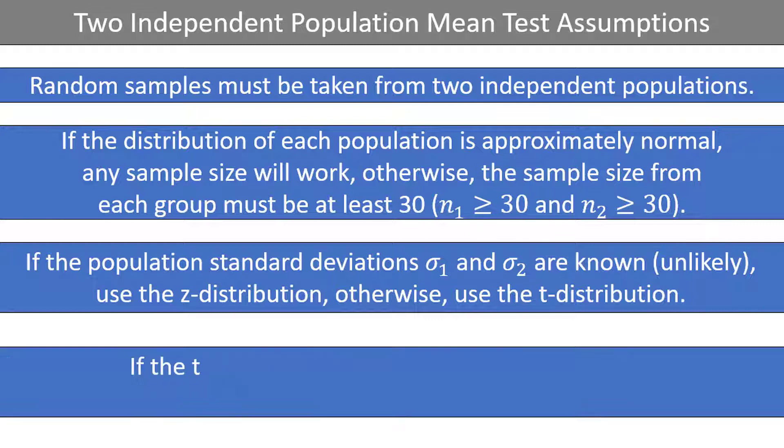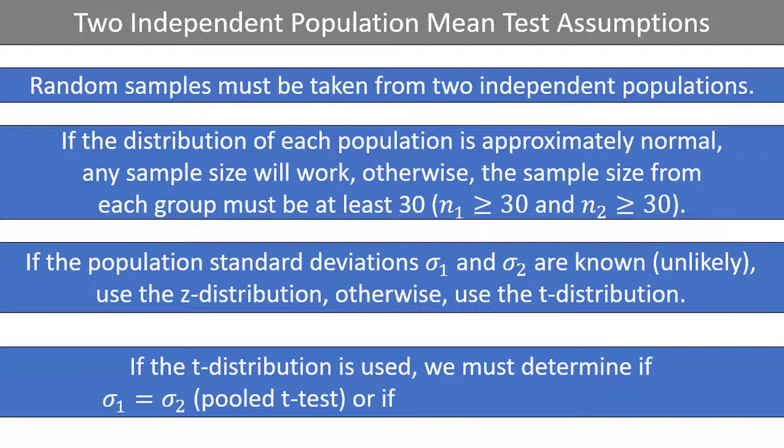Finally, if the t-distribution is used, which is all the time for me, we must determine whether or not the population standard deviations of the two populations are equal, in which case we will use the pooled t-test, or if they are unequal, in which case we will use the unpooled t-test. So as you see, there are actually three different options: a z-test, a pooled t-test with equal standard deviations, or an unpooled t-test with different standard deviations.